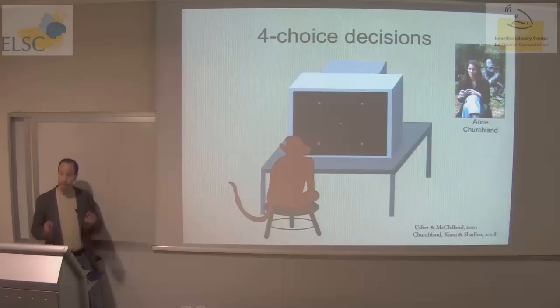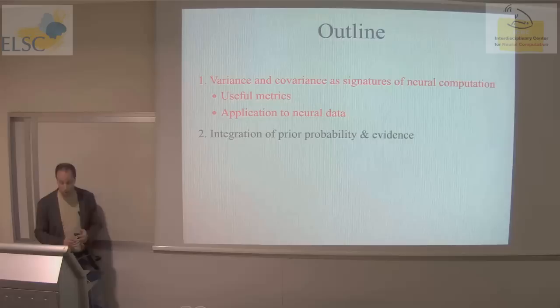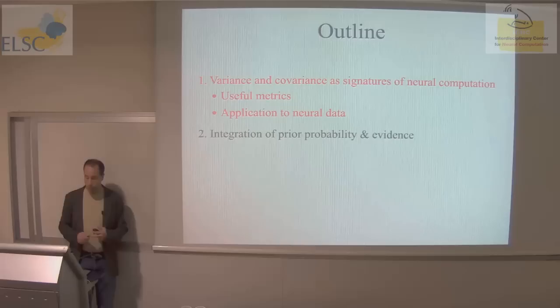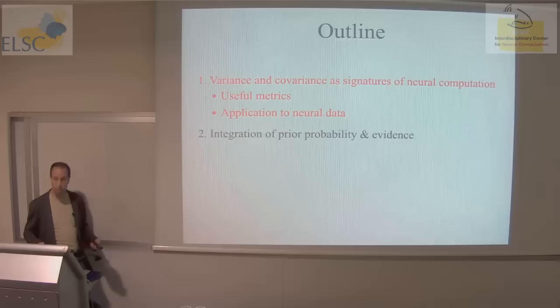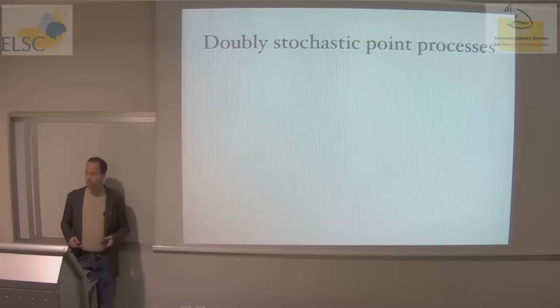That's the background — it was really meant for people who weren't here on Tuesday. Now let's turn to the first topic, which is to use variance and covariance as signatures of neural computation. I'm going to introduce a metric that I hope will be useful to many of you, even if you don't want to study decision-making. I'm going to unite two very simple ideas: the theory of doubly stochastic point processes, and the laws of total variance and total covariance. It's a really simple idea, but it turns out to be useful.